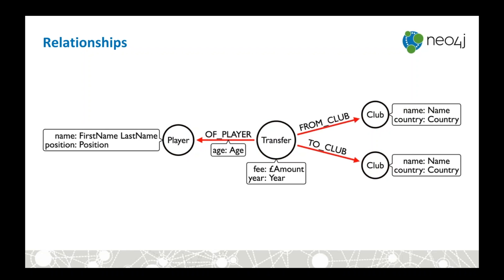Next we have relationships, which glue our bits of data together. One key difference between a relational database and a graph database is that these relationships actually represent the join rather than storing primary key/foreign key references. In a relational database we compute that join at query time, whereas in a graph database we store it when we create the data. We can also name relationships — for example, from a transfer to a player the relationship is called 'of_player', and from a transfer to a club it's called 'from_club'.